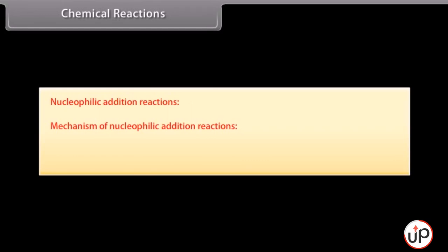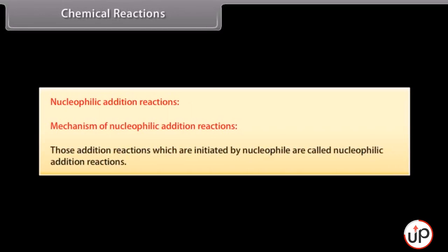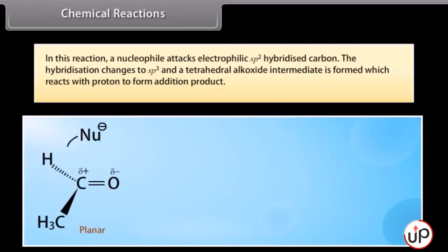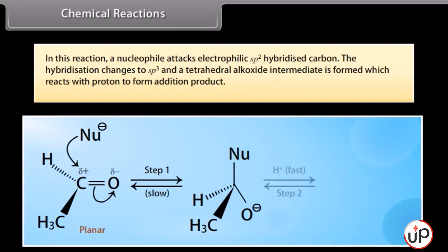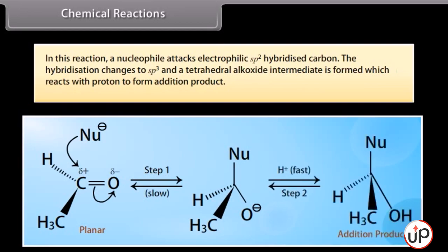Nucleophilic addition reactions. Mechanism of nucleophilic addition reactions: those addition reactions which are initiated by a nucleophile are called nucleophilic addition reactions. In this reaction, a nucleophile attacks electrophilic sp2 hybridized carbon. The hybridization changes to sp3 and a tetrahedral alkoxide intermediate is formed, which reacts with a proton to form the addition product.